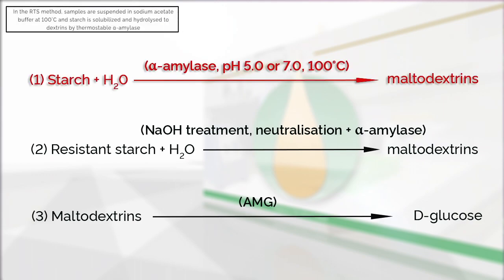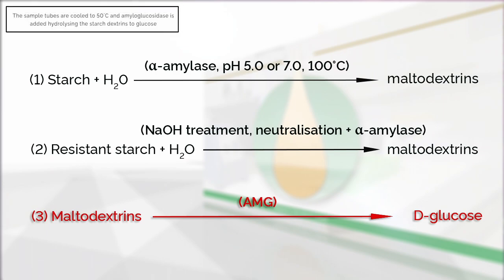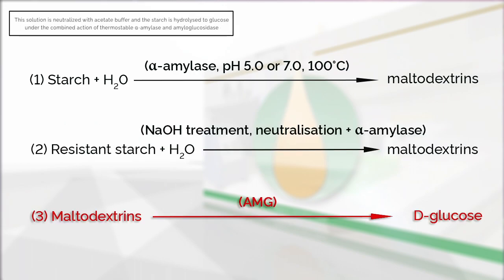In the RTS method, samples are suspended in sodium acetate buffer at 100 degrees Celsius, and starch is solubilised and hydrolyzed to dextrins by thermostable alpha amylase. The sample tubes are cooled to 50 degrees Celsius and amyloglucosidase is added, hydrolyzing the starch dextrins to glucose. In the RTS sodium hydroxide procedure, resistant starch is first dissolved in sodium hydroxide solution. This solution is neutralised with acetate buffer, and the starch is hydrolyzed to glucose under the combined action of thermostable alpha amylase and amyloglucosidase.